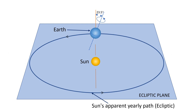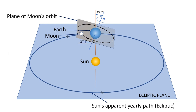We all know that the Moon orbits around the Earth. The Moon's orbit has an angle of about 5 degrees to the ecliptic plane. If you draw an imaginary plane containing the Moon's orbit, this will also be at an angle of about 5 degrees to the ecliptic plane. This is shown with a tilted rectangle on the screen.